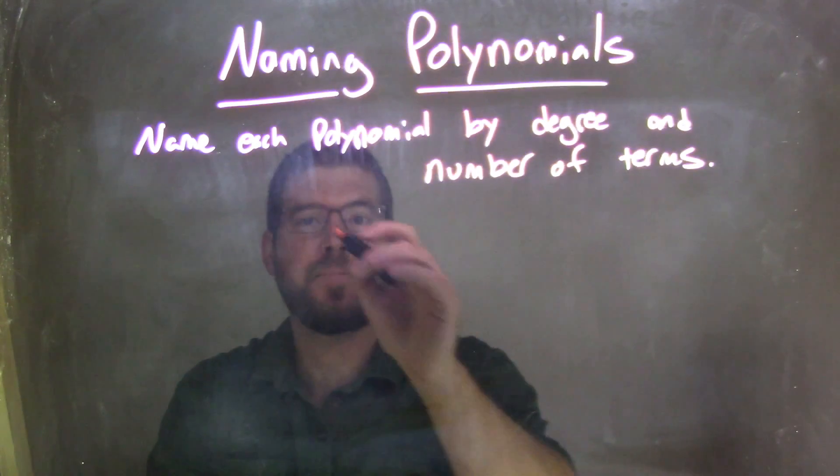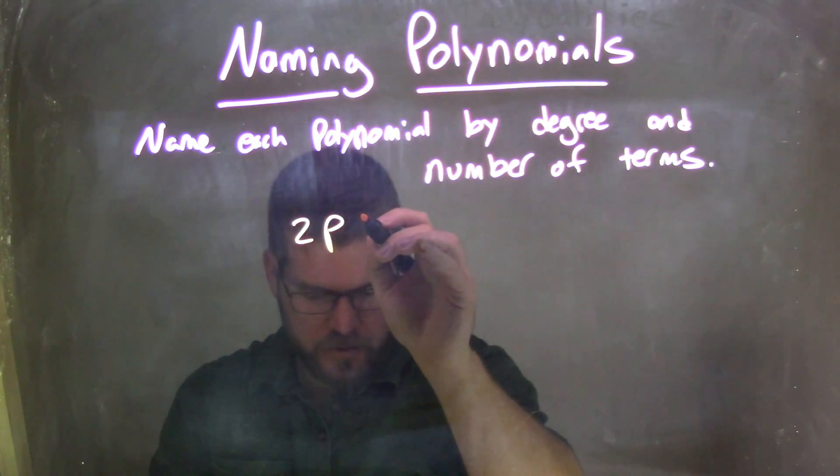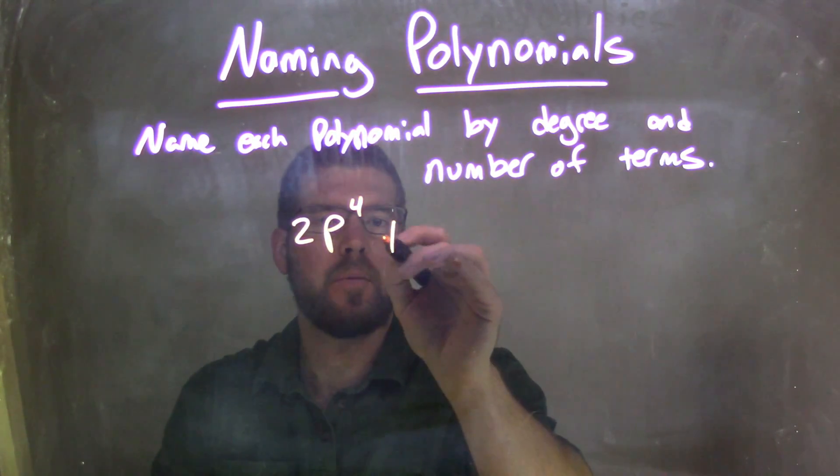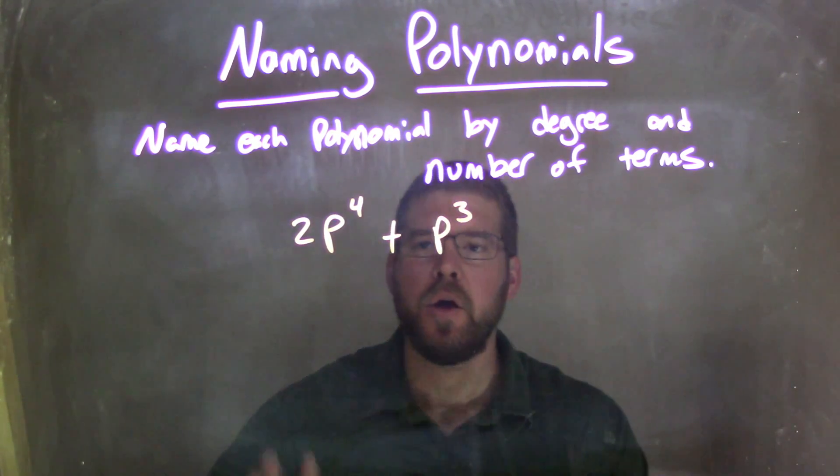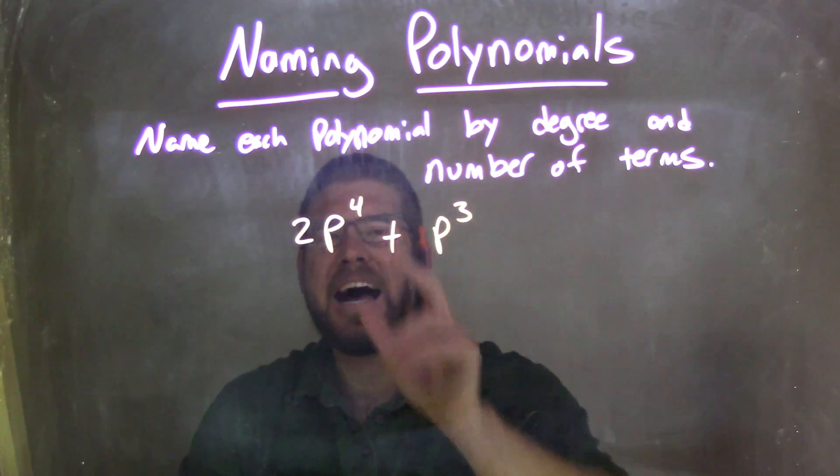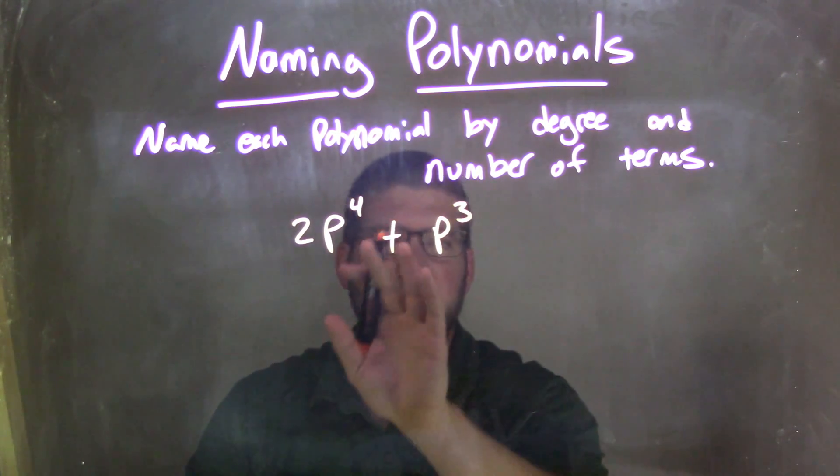So if I was given this polynomial, 2p to the 4th plus p to the 3rd, what we need to look at is the highest degree. The highest degree is 4.